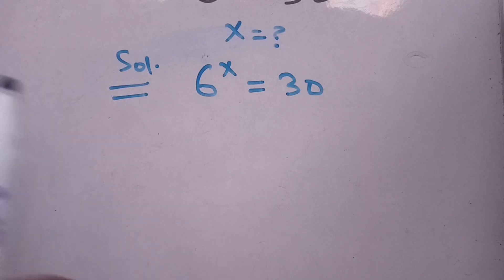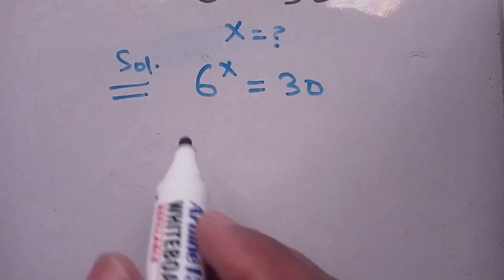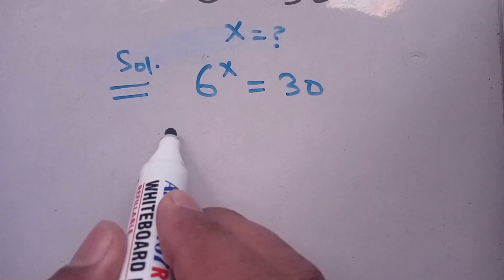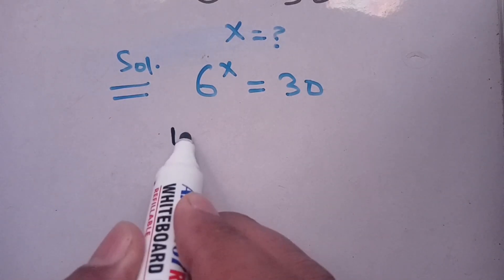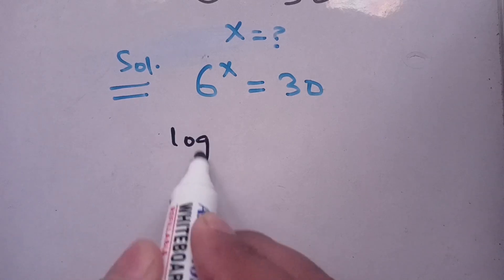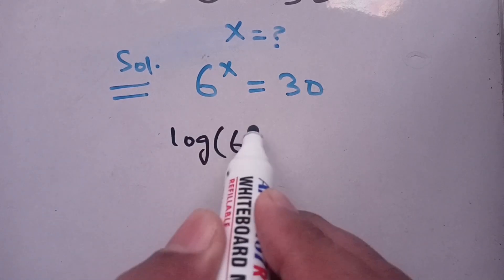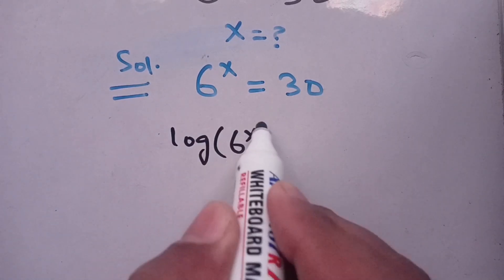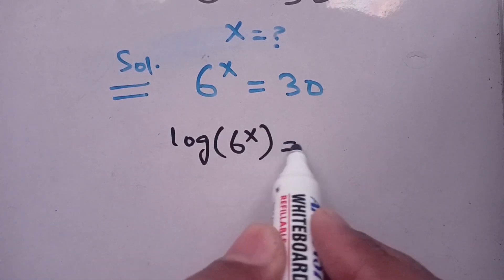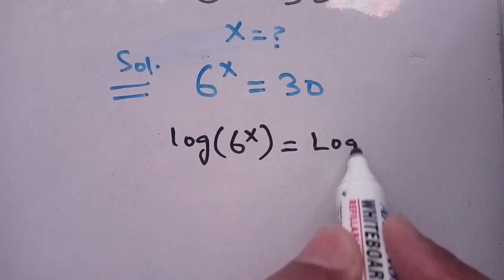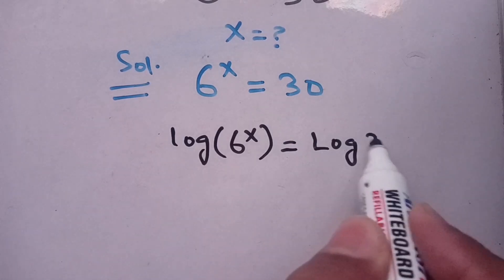In the next step we take log on both sides. On taking log on both sides we get: log of 6 power x is equal to log of 30.